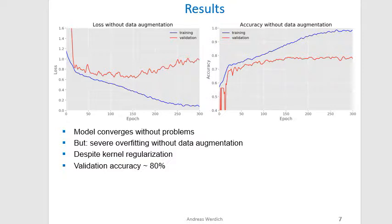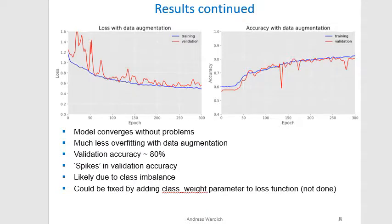The validation accuracy was about 80%. With data augmentation, there's much less overfitting, but we can still see some spikes in the validation accuracy, which is likely due to the class imbalance. This could be fixed by adding class weights to the loss function.